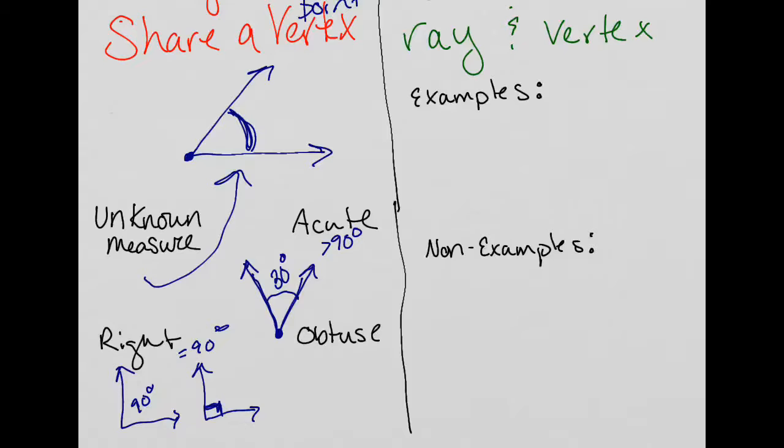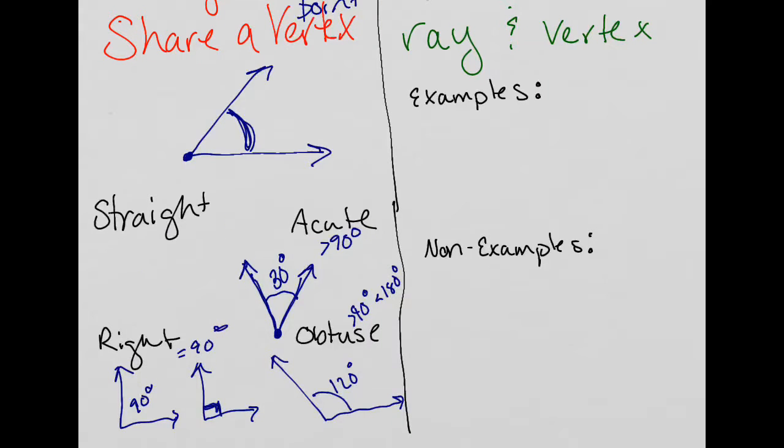An obtuse angle is an angle that measures greater than 90 degrees but less than 180 degrees. So this angle, if I put 120 degrees, that would be an obtuse angle. The fourth or fifth type of angle, we did unknown, which was this top one. Then we did acute, right, and obtuse.